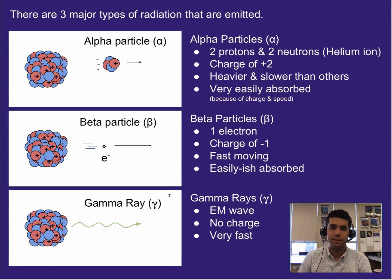The last type we'll talk about are gamma rays. Now when we talk about gamma rays, also think x-rays as well. Gamma rays are not particles. It's an EM wave, so an electromagnetic wave. It has no charge and it moves extremely fast. Now these are the three major types of radiation emitted when a nucleus of an atom is unstable and it decays radioactively.